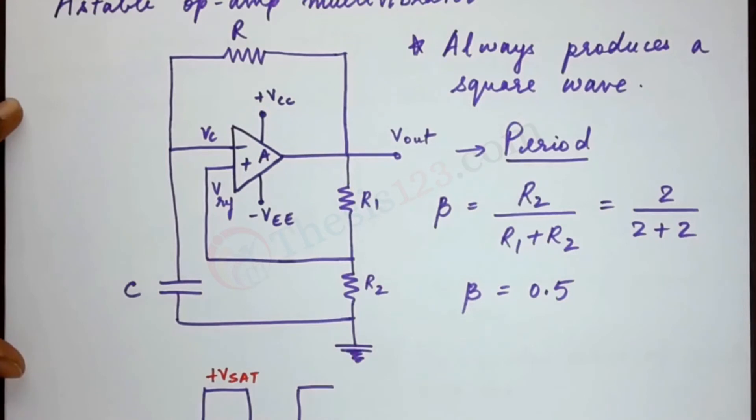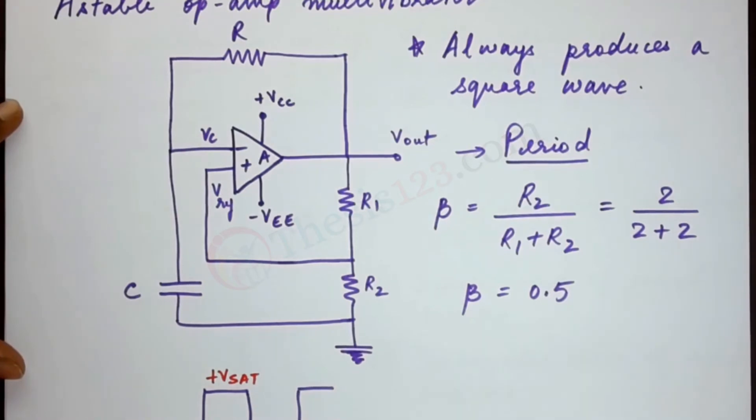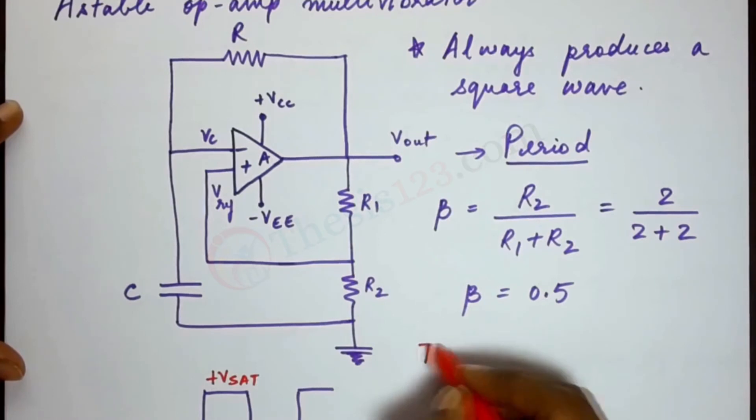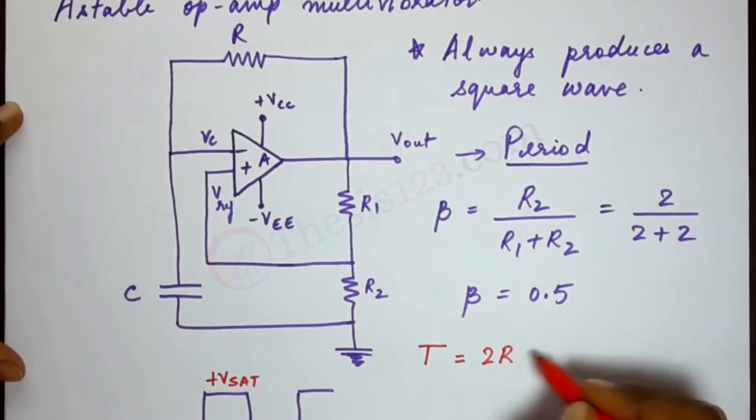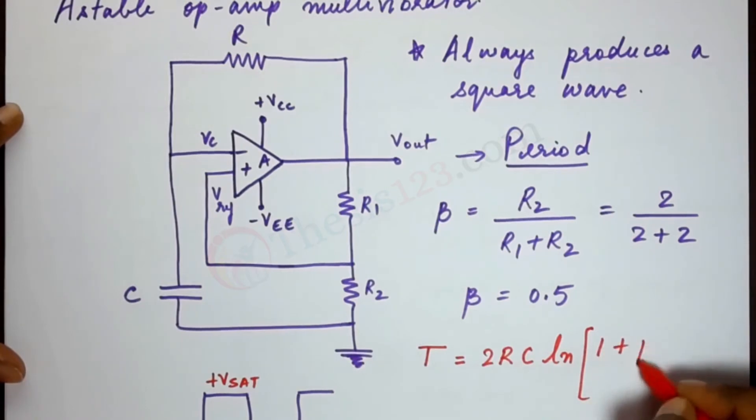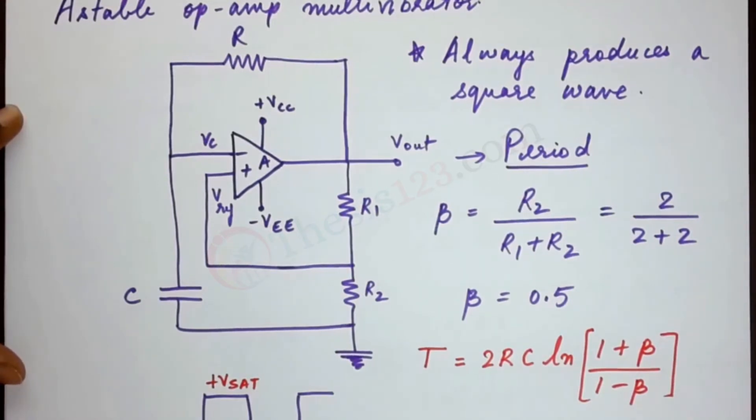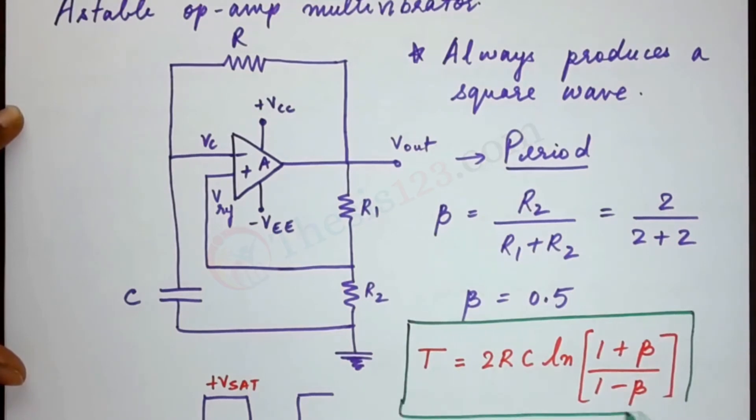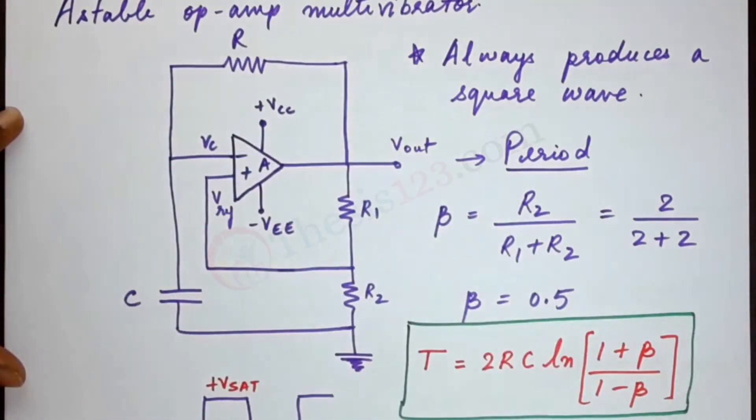Now once we have the RC time constant, the next step is to write down the formula. There is a special formula here for an A-stable op-amp multivibrator. The time period T can be found by using this formula: 2RC Ln of 1 plus beta divided by 1 minus beta. An interesting formula. Please make sure that you note it down alongside the concept of an A-stable op-amp multivibrator.